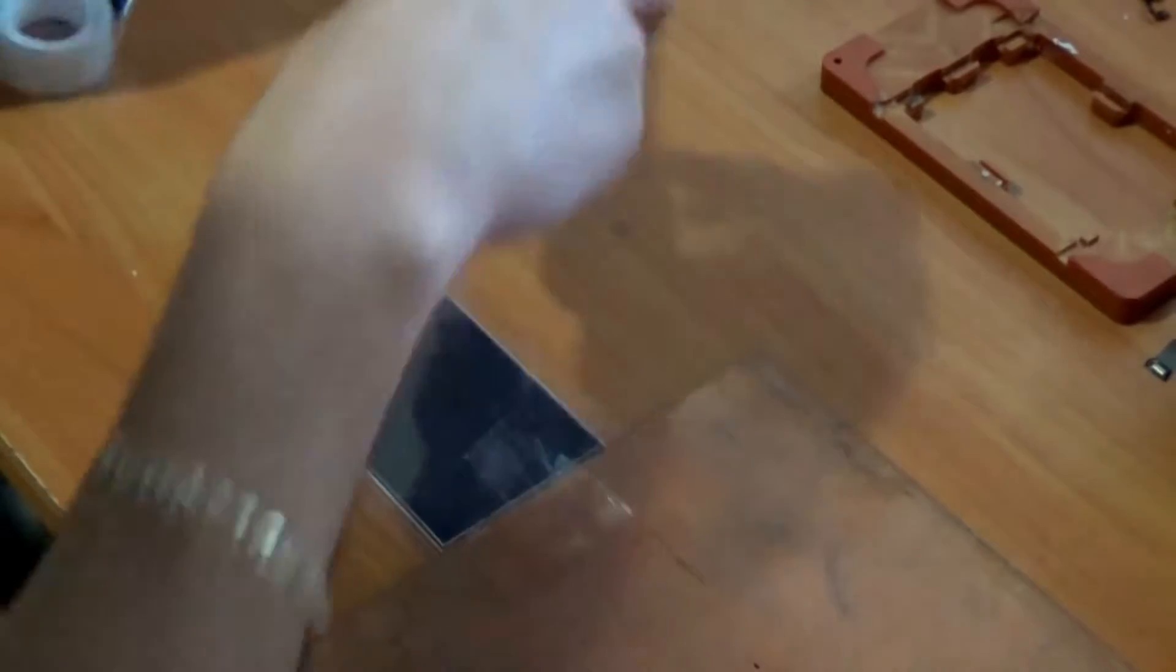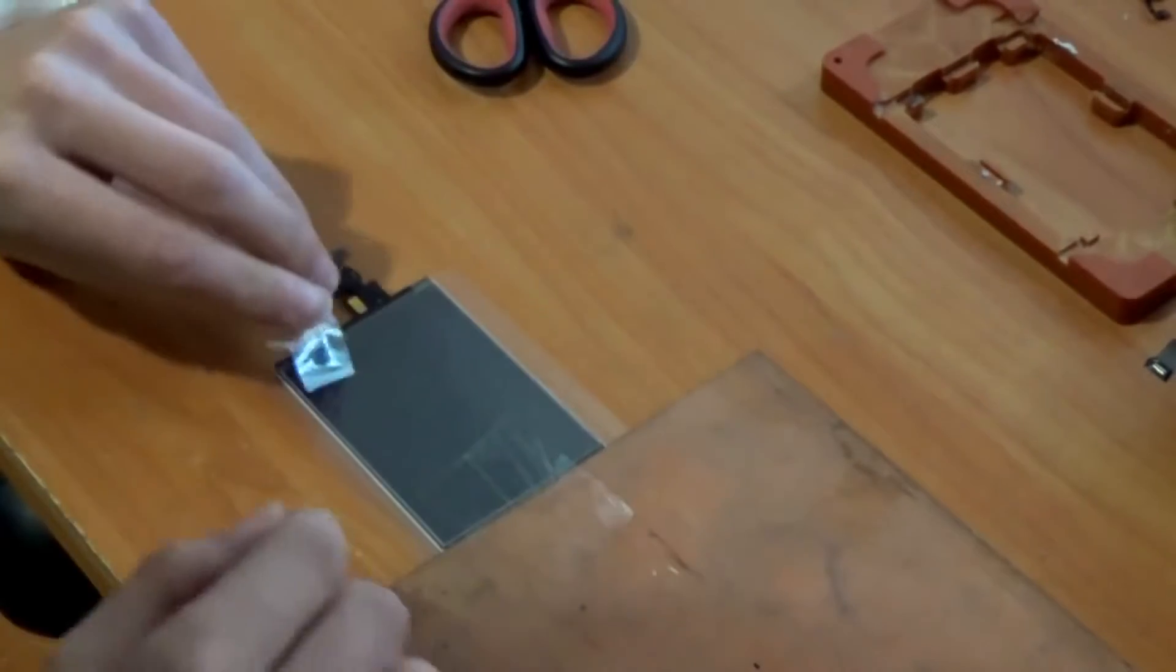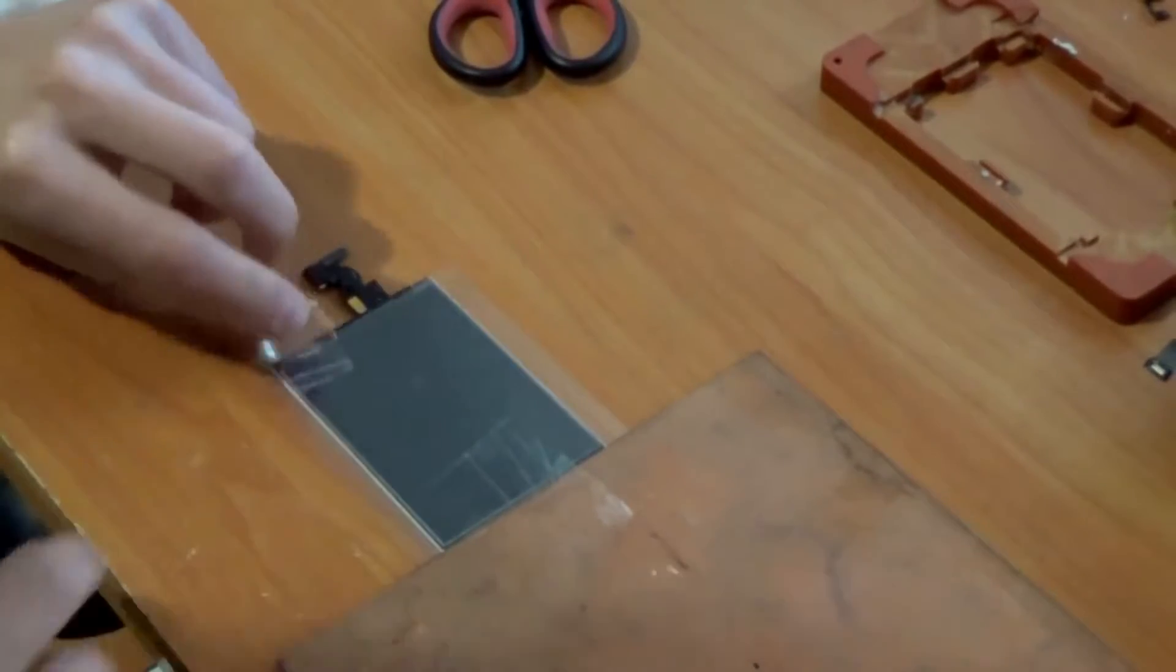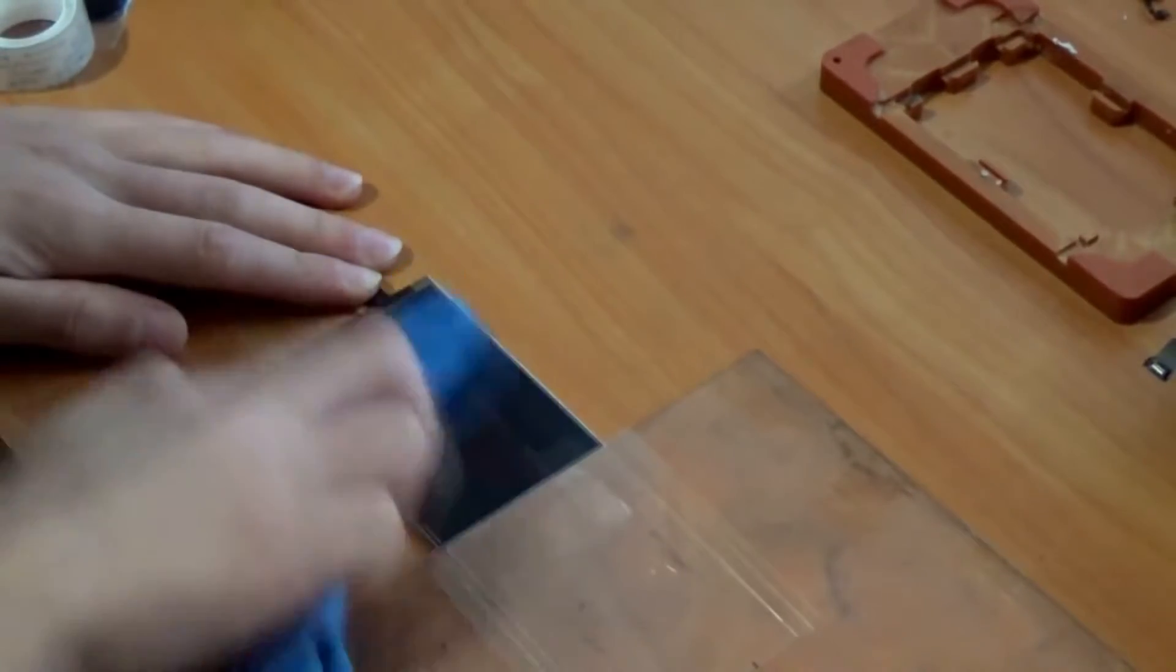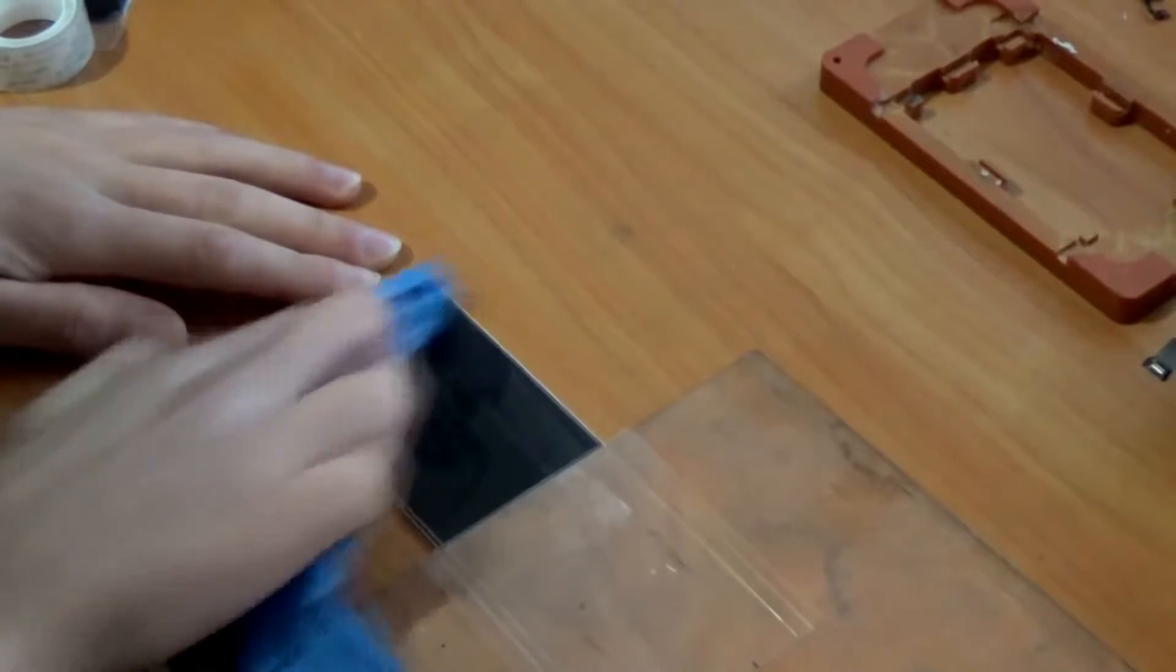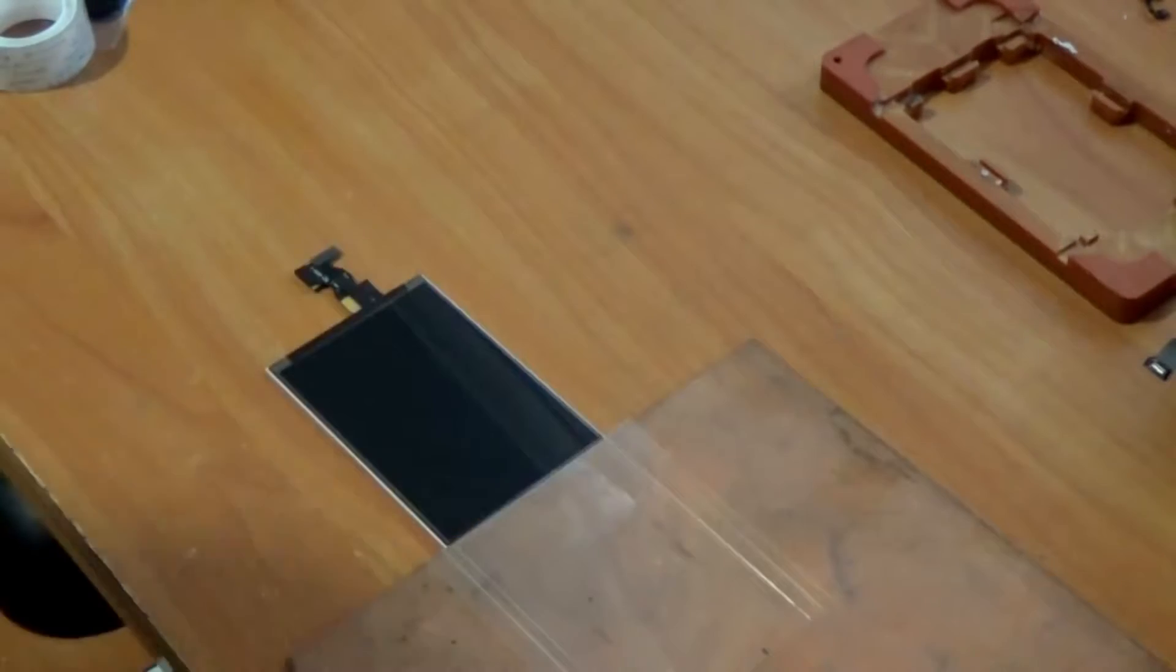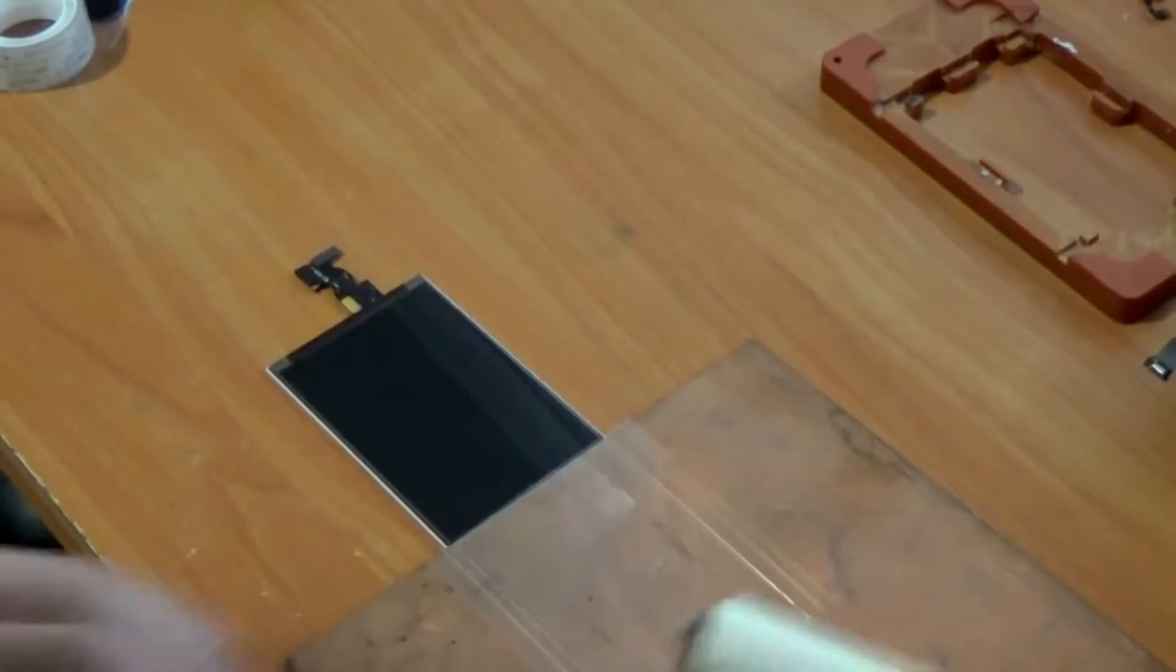Make a handle like this using an adhesive. Clean the screen once again to make it perfectly clear. Now we need a roller like this.